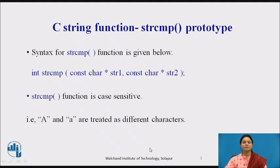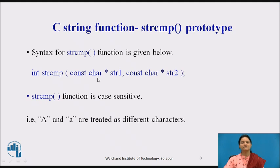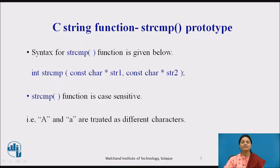strcmp is a library function to compare two strings. The syntax or prototype for strcmp is: integer strcmp, as it returns an integer value. It takes a character pointer str1 and a character pointer str2, so these two strings are compared. One important thing is that strcmp is case sensitive — for example, capital A and small a are treated as different characters and are not considered the same character.